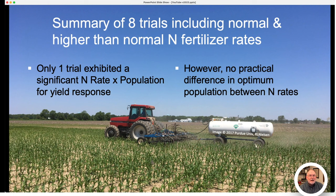Eight of our trials included two different nitrogen rates — a normal and a higher-than-normal. Only one of those eight trials exhibited a significant nitrogen rate by plant population interaction for yield response. And even in that one trial, there was no practical difference in optimum population between nitrogen rates. This tells me that within the range of populations most growers are currently using, as long as the grower is using the recommended optimum nitrogen rate, there's no need to further increase that rate if you choose to increase plant populations.